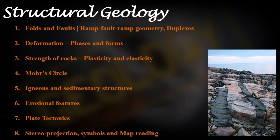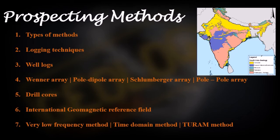Prospecting methods: there are types of methods to find minerals and coal. Logging techniques, well logs, then there's Wenner array, pole-dipole array, various types of arrays. Questions are coming on these. Drill cores, International Geomagnetic Reference Field, very low frequency method, time domain method, TURAM method, etc. All these prospecting methods we will cover. Well, at least there are two questions each year from these sections, from prospecting methods.